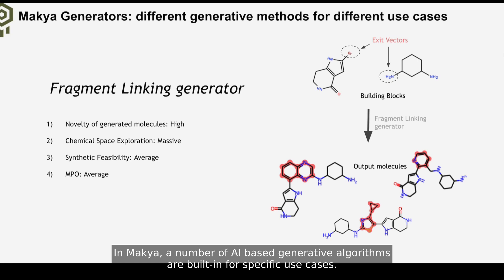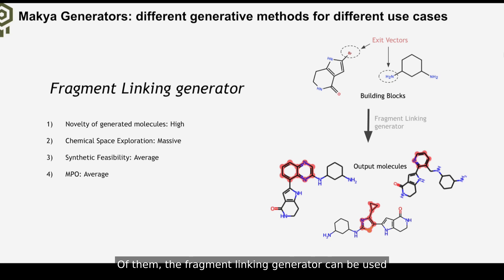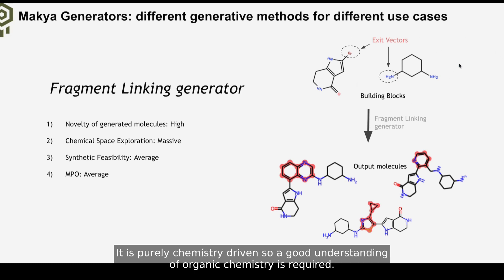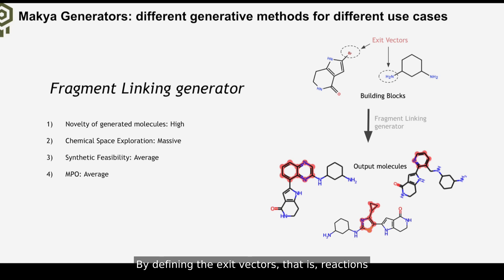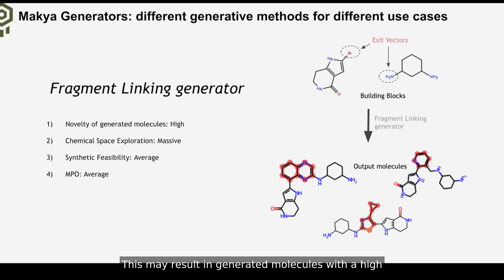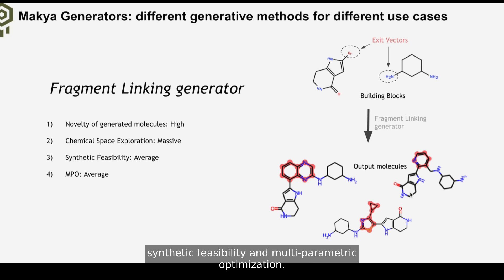In Makya, a number of AI-based generative algorithms are built in for specific use cases. The Fragment Linking Generator can be used for generating compounds by proposing new linkers or scaffolds between two building blocks. It is purely chemistry-driven, so a good understanding of organic chemistry is required. By defining the exit vectors — that is, reaction centers where the chemistry will take place — the generator will search for commercial building blocks which can react in such positions. This may result in generated molecules with high chemical diversity, albeit an average potential for synthetic feasibility and multi-parametric optimization.